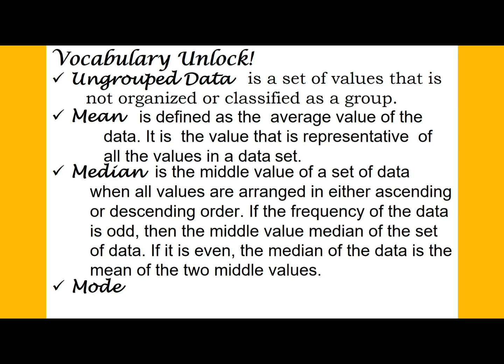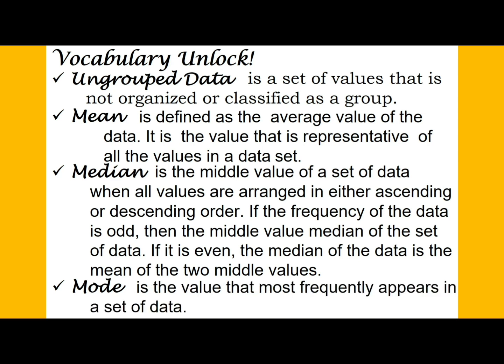To get the mean, just simply add the values and divide by the number of values. If the frequency is even, then basically you will get two middle values for the median — just add the two values and divide by two. When we say mode, this is the value that most frequently appears in a data set. If you recall, we have unimodal, bimodal, and trimodal.